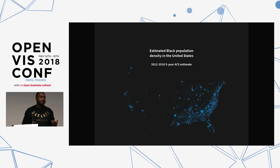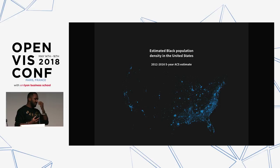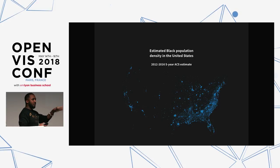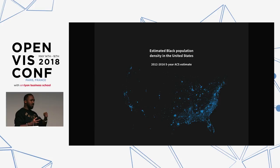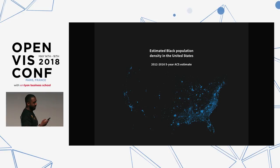I started pulling census data for the last 30 years or so, including estimates. Every 10 years we have a census in the U.S., and then every year they do what's called the American Community Survey — ACS. They do surveys and produce estimates, not hard counts like the normal census, but they give us a good idea. The five-year data is about the best.